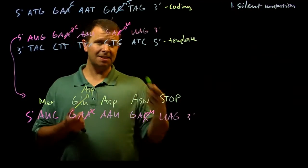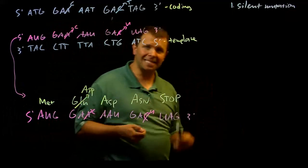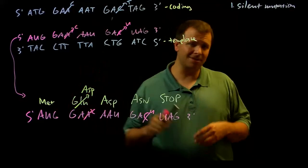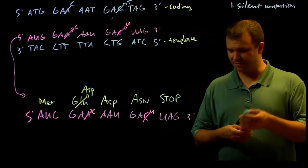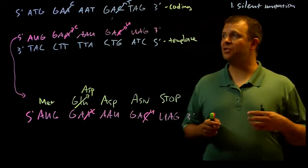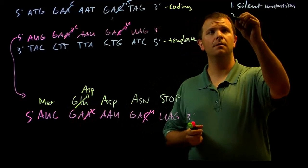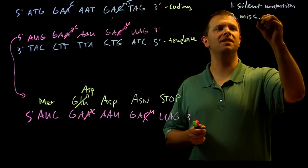And so this mutation, this change in the DNA, has resulted in a change in the RNA and a change in the amino acid sequence and potentially a change in the function of the protein. When we change one codon to another, we call this kind of mutation a missense mutation.